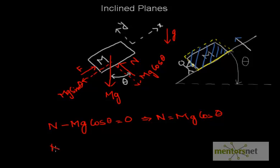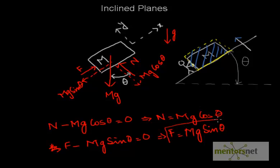Similarly, f minus mg sin theta equals zero, so f equals mg sin theta. Now what is the use of this inclined plane? What we can see is that the force the person is required to apply is equal to mg sin theta.